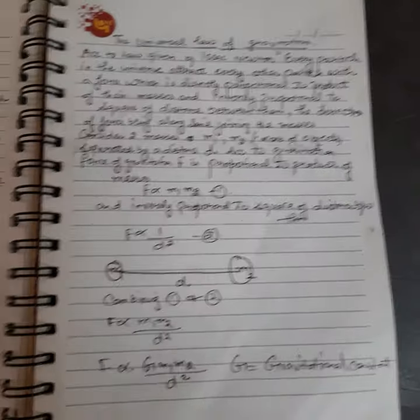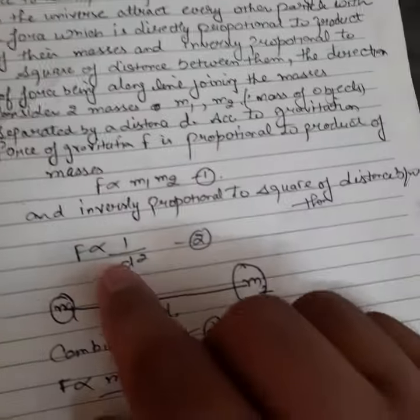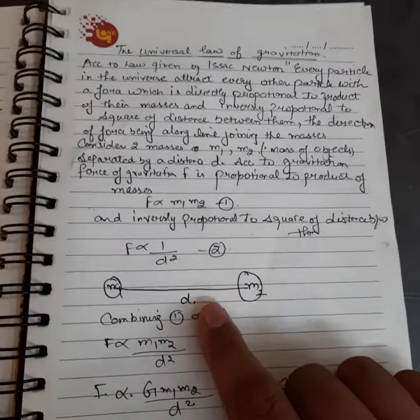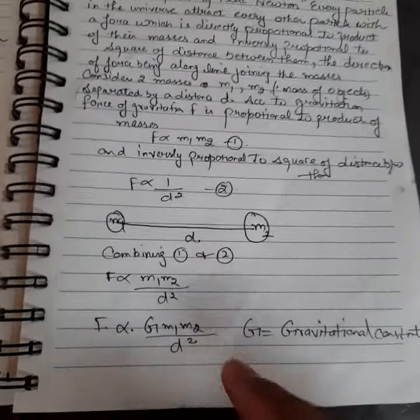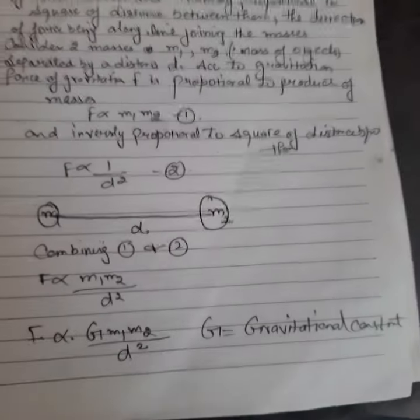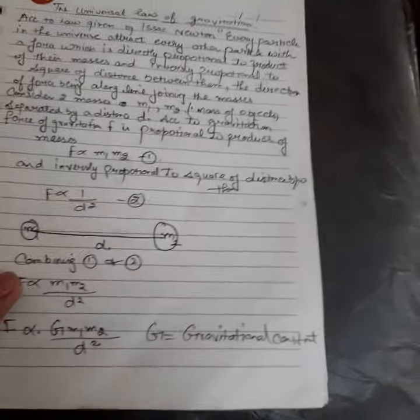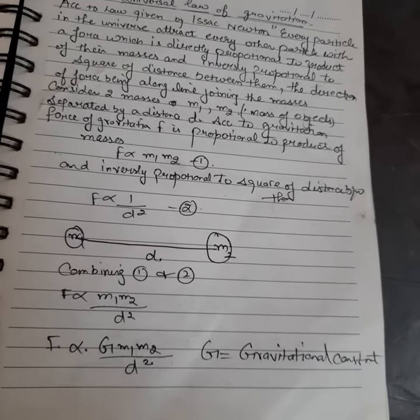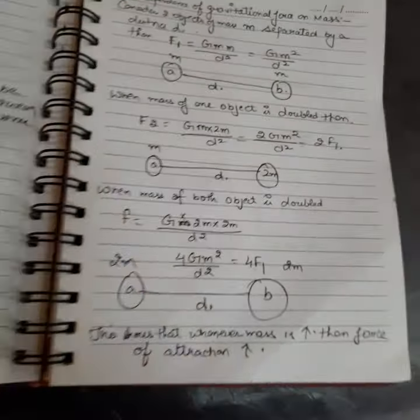According to the universal law of gravitation, F is directly proportional to the product of masses, small m and capital M. F is inversely proportional to d square. Combining equations one and two, F is directly proportional to M multiplied by m divided by d square. Adding the constant of proportionality, F equals G into small m into capital M upon d square. Capital G is the universal gravitation constant.